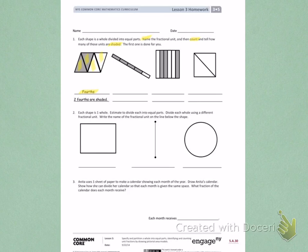When I go back, I can count and see that there is 1 fourth, 2 fourths shaded. And that's why they have written 2 fourths are shaded. Let's look at the next picture.